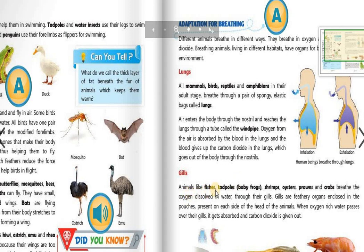Animals like fishes, tadpoles which are baby frogs, shrimps, oysters, prawns, and crabs breathe the oxygen dissolved in water through their gills. Gills are feathery organs enclosed in pouches present on each side of the head of the animals. When oxygen-rich water passes over their gills, it gets absorbed and carbon dioxide is given out.